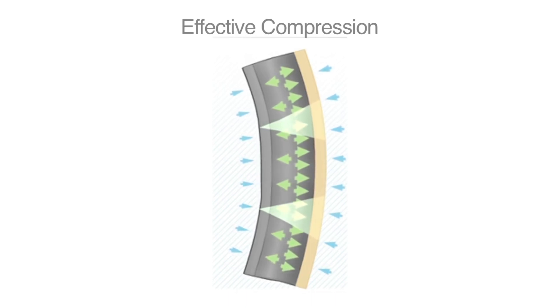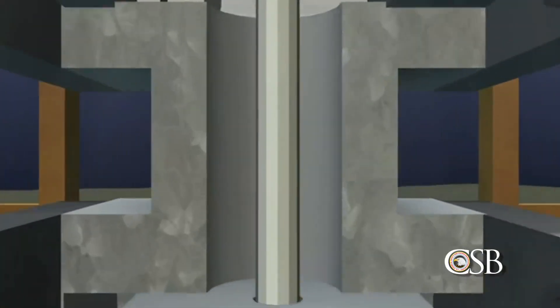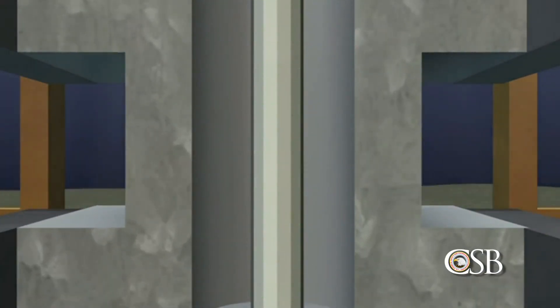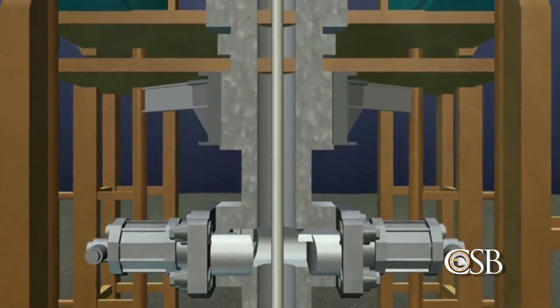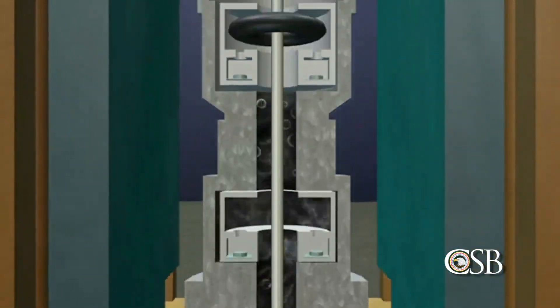This is an important finding, CSB investigators said, because the same conditions of differential pressure could occur at other drilling rigs, even if a crew successfully shuts in a well. The CSB warned this could make existing blowout preventer designs less effective in emergency situations.